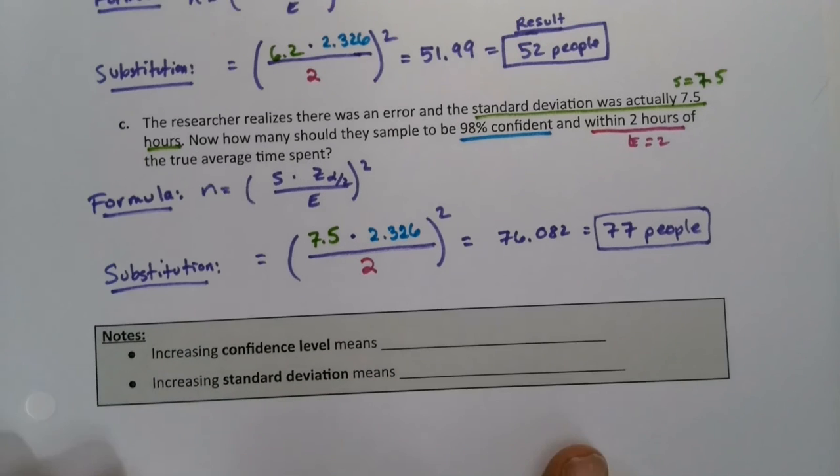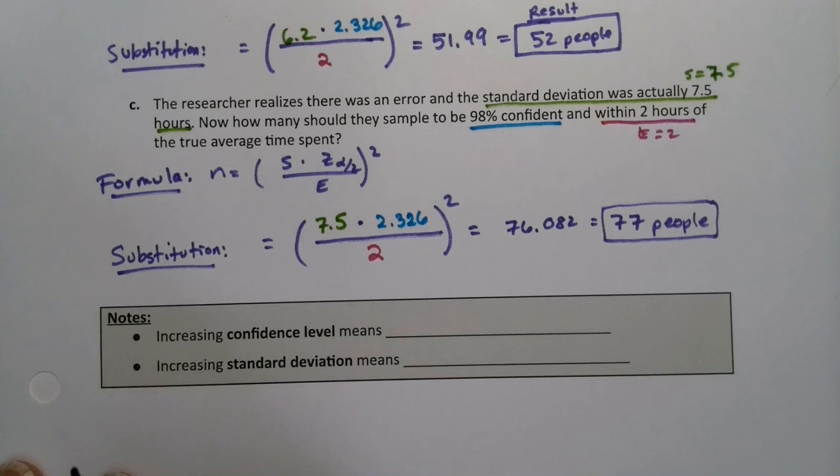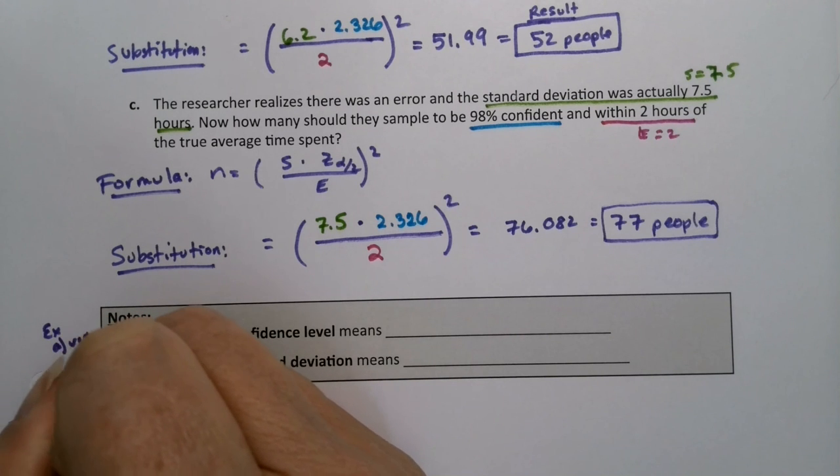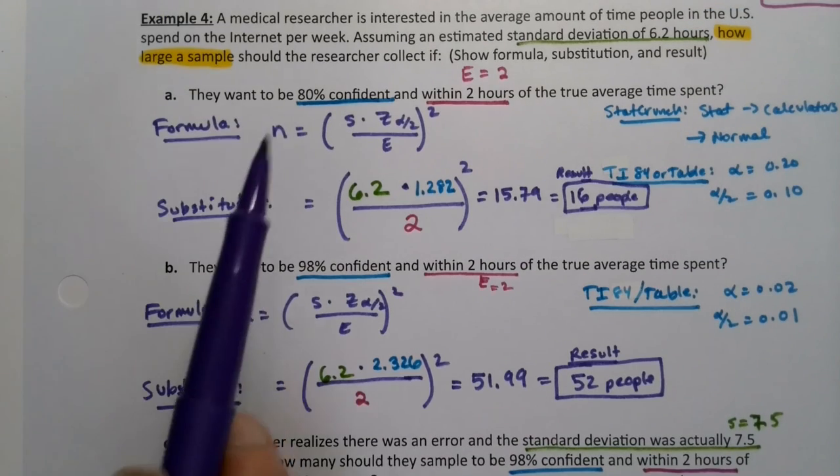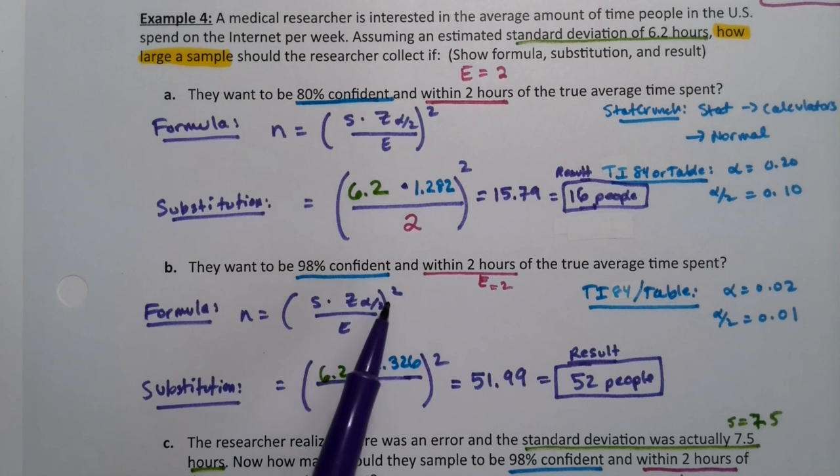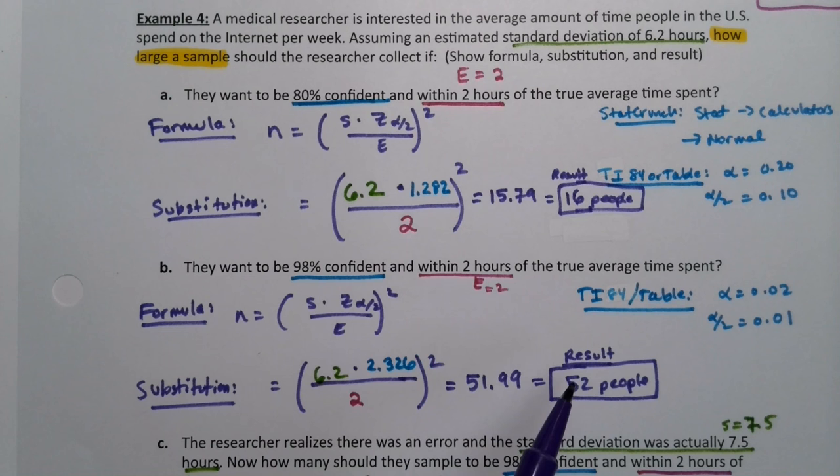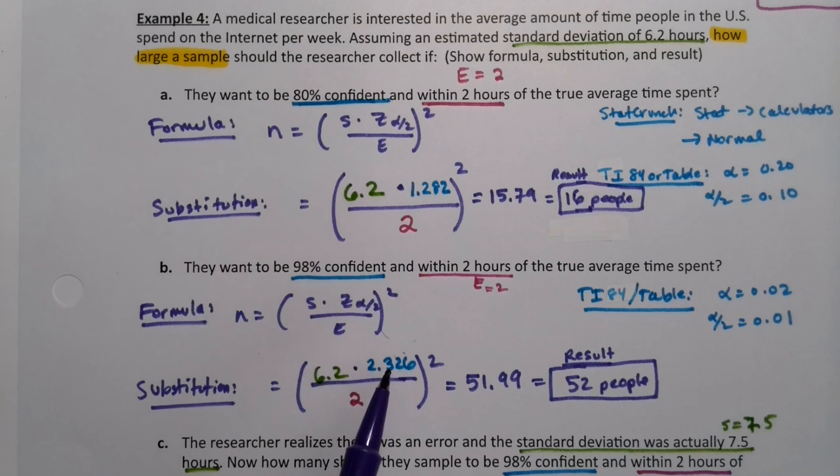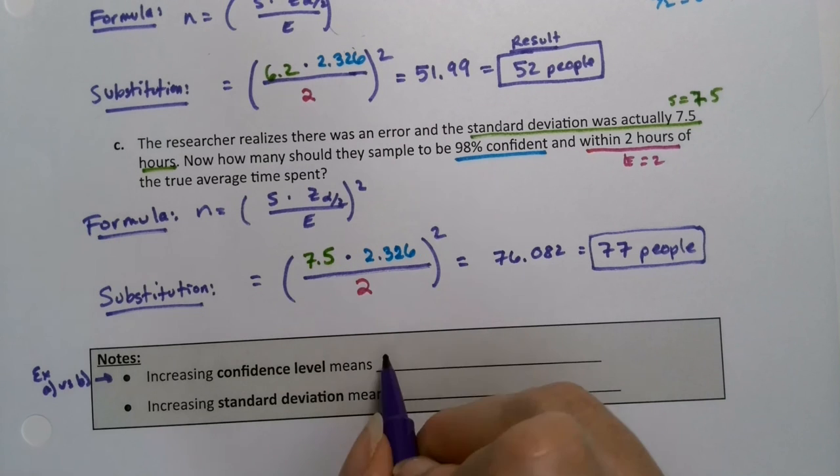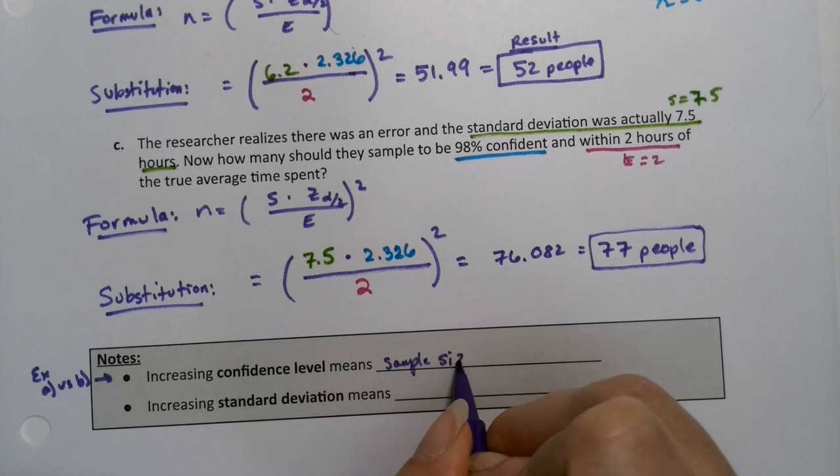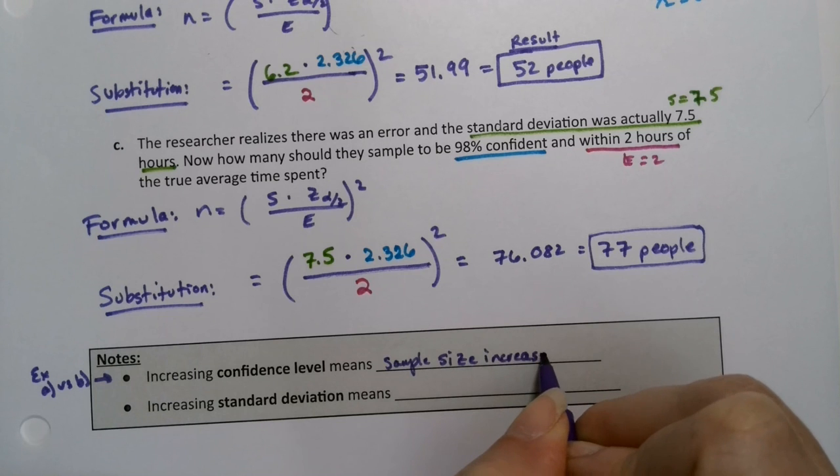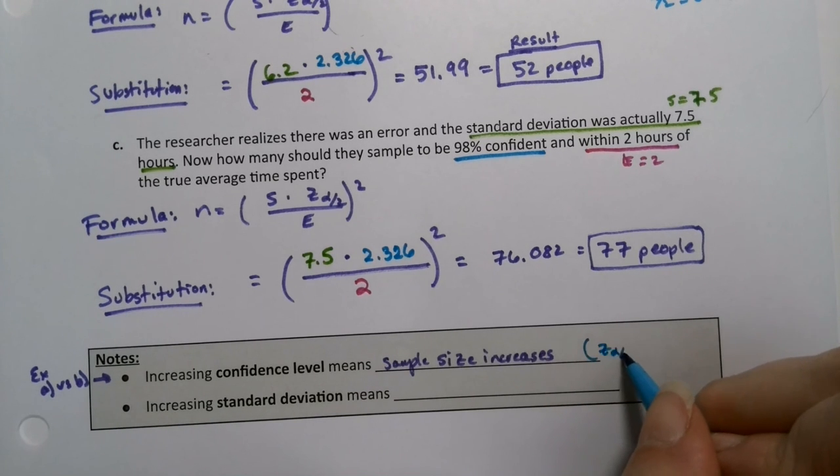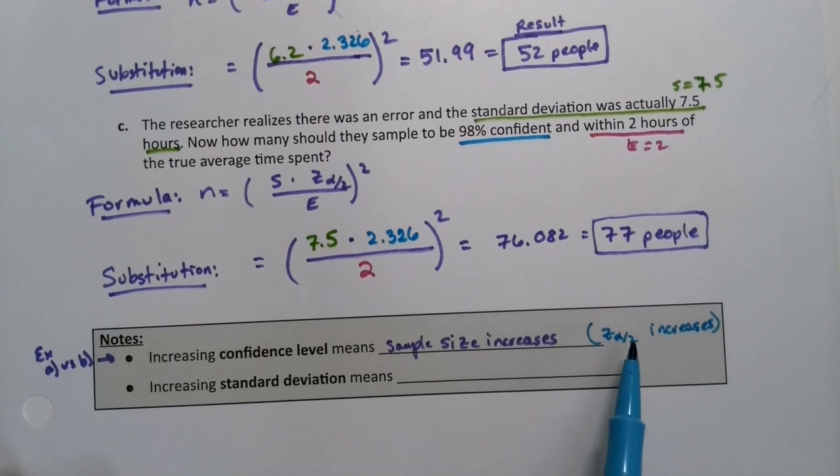Now I set these up for a reason. There's some things going on here. If you compare A with B, increasing our confidence level from 80 to 98, but left everything else the same, look what happened. It raised the number of people. That's because our confidence level is affecting the Z in the numerator. When you raise your confidence, you raise your Z. So increasing your confidence level means sample size increases. You could say also the Z alpha over two increases. That's why it's happening. When your Z alpha over two increases, it's in the numerator. So when it gets larger, the sample size gets larger.